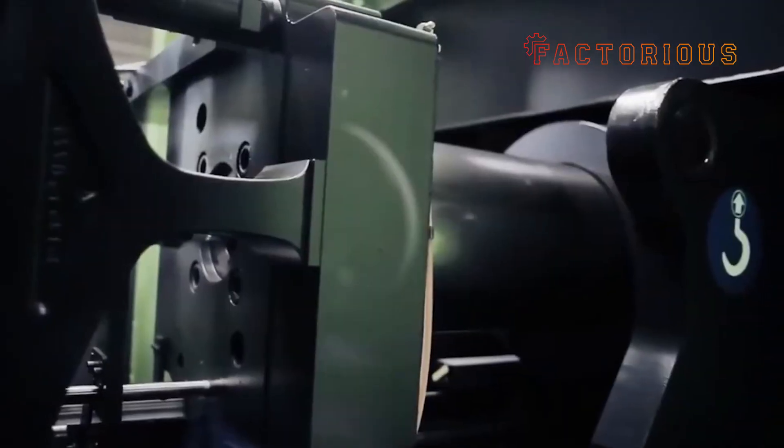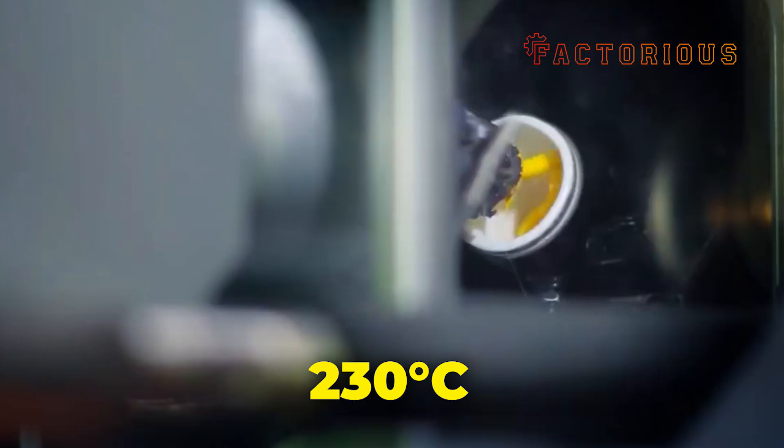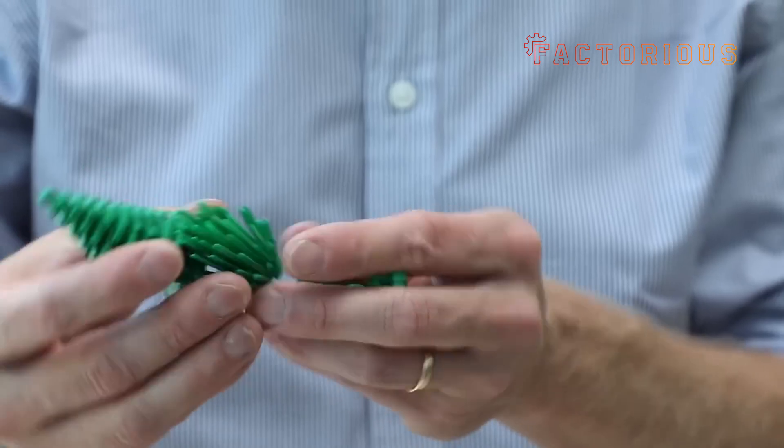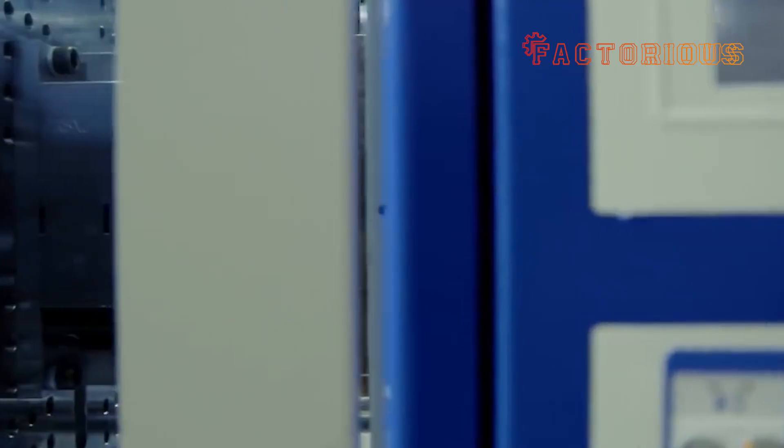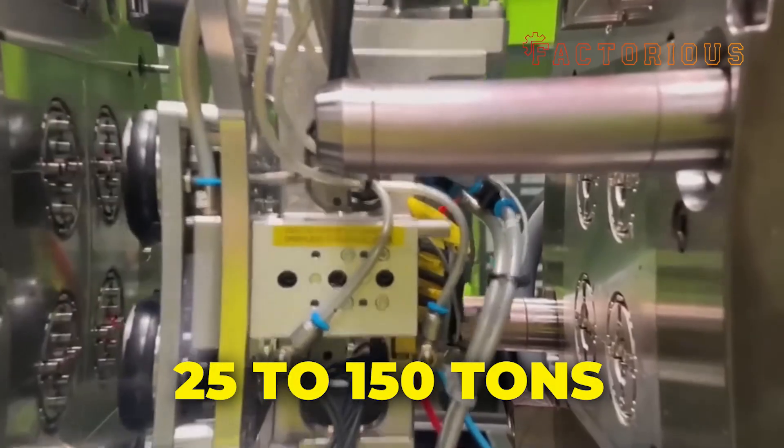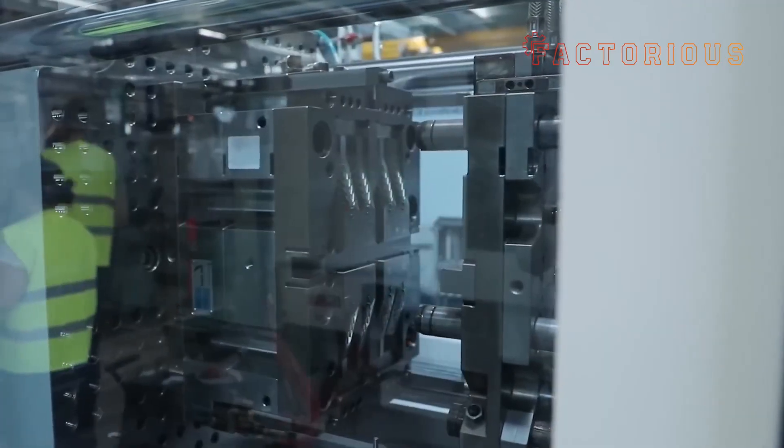Each one is a multi-million dollar injection molding machine that transforms those tiny pellets into perfect Lego bricks. Here's how it works. The pellets are fed into the top of the machine through a funnel, then heated to around 230 degrees Celsius. That's hot enough to melt ABS into a thick, syrupy liquid.